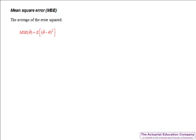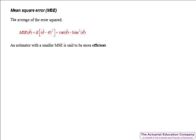The second property we'll look at is the mean square error, which is the mean — or average — of the square of the error. The error is the difference between the true value theta and our estimated value theta hat, so we square it and find its average value. An alternative equivalent expression is the variance of the estimator plus the bias of the estimator squared. This gives a measure of the spread of results around the true value. An estimator with a smaller mean square error is said to be more efficient, and if the mean square error tends towards zero for large sample sizes then it's said to be consistent — consistent with our understanding that a larger sample gives a more accurate result.